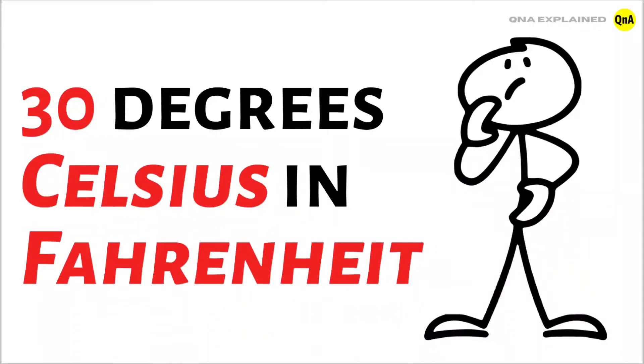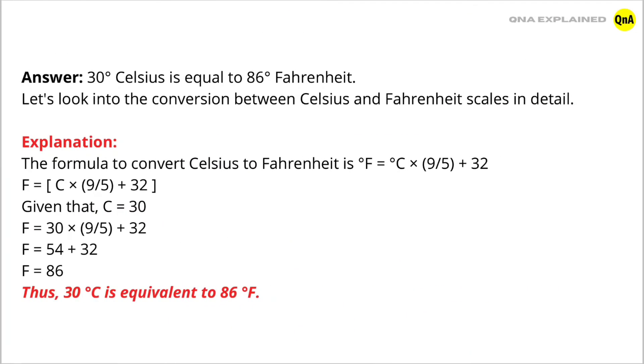30 degrees Celsius in Fahrenheit. The answer is 30 degrees Celsius is equal to 86 degrees Fahrenheit.